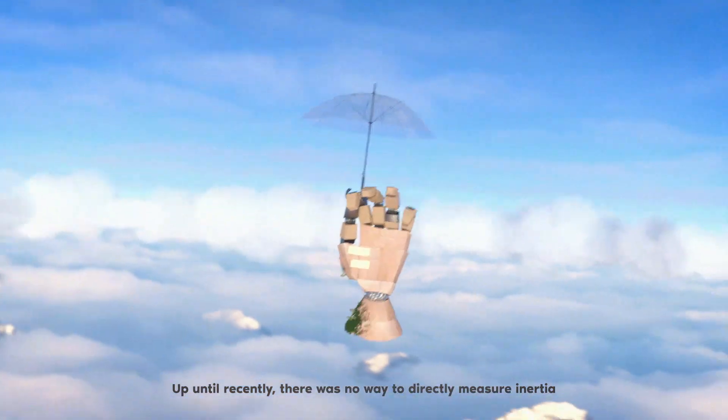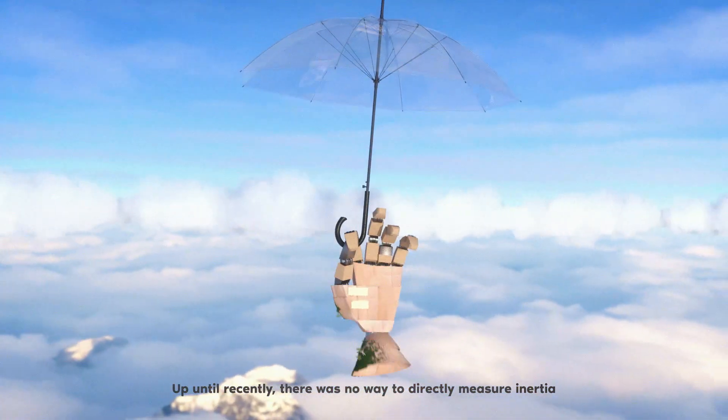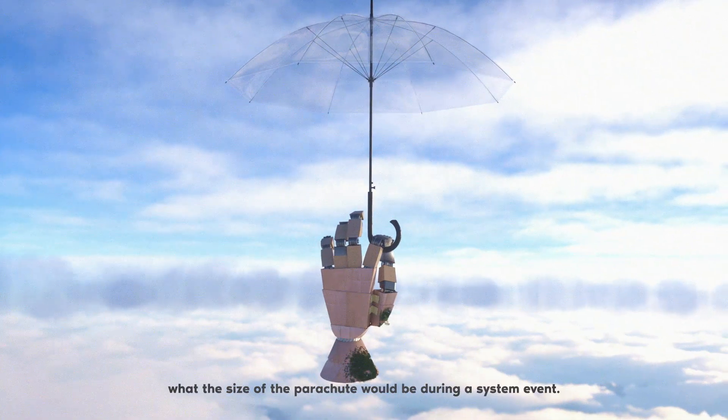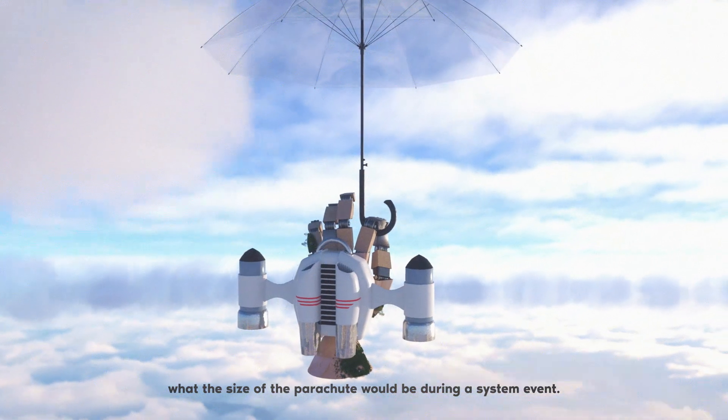Up until recently, there was no way to directly measure inertia, so grid operators had no way of knowing what the size of the parachute would be during a system event.